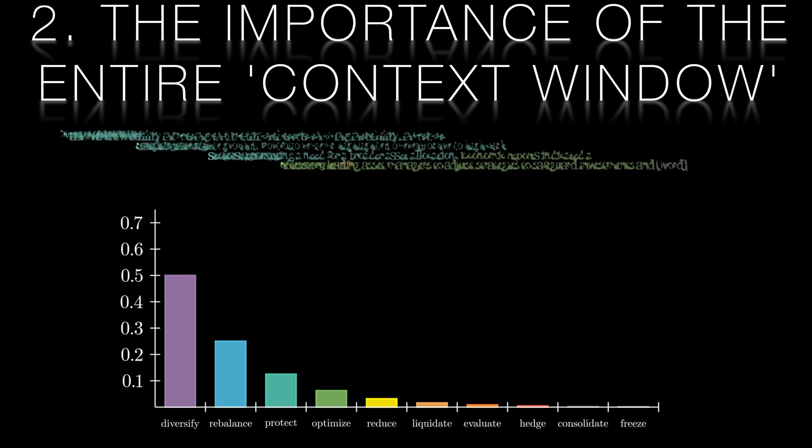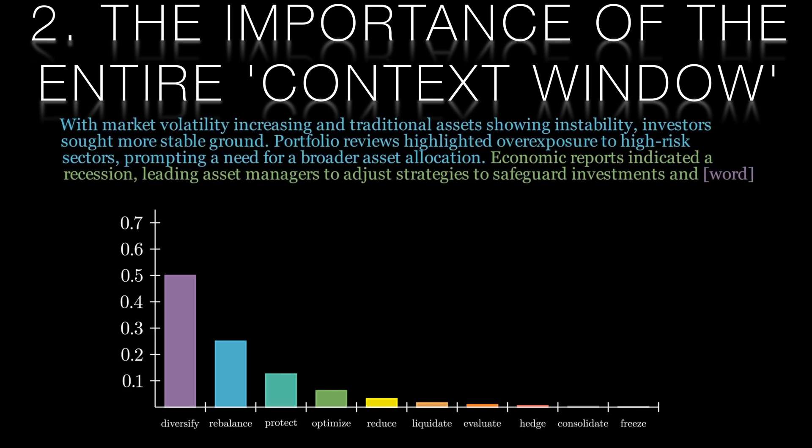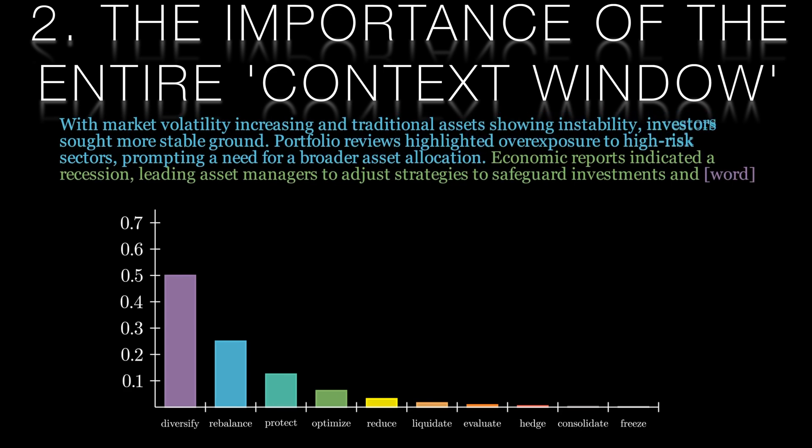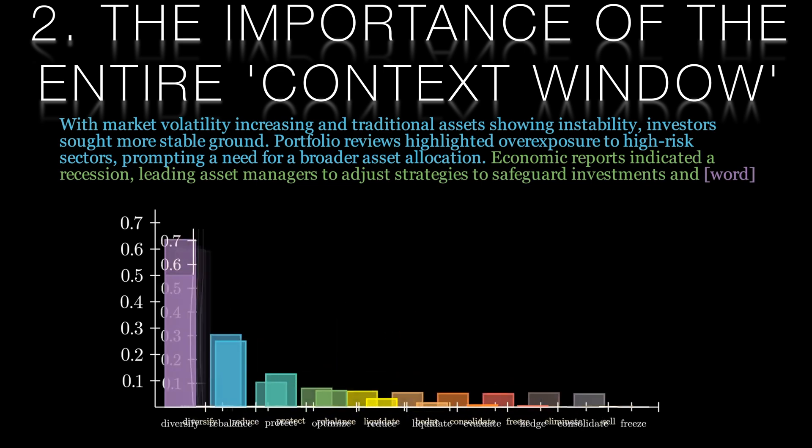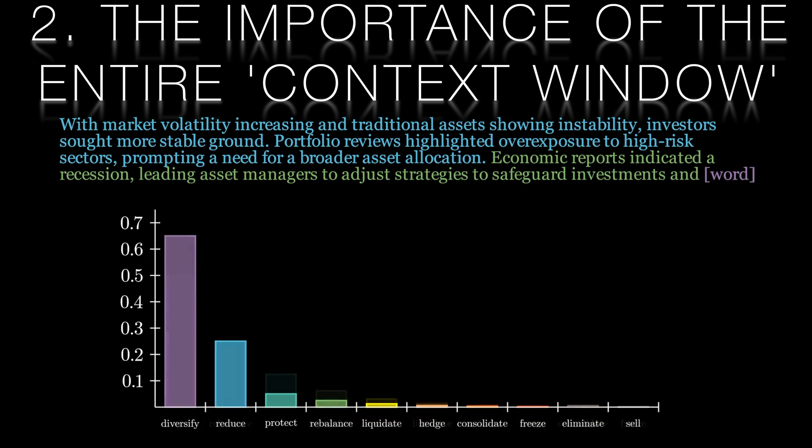Now, let's expand our context. Imagine a more detailed scenario where market volatility and overexposure to high-risk sectors are mentioned. Notice how the probability distribution shifts. Diversify remains a very likely choice, but now other words like reduce or protect gain prominence.